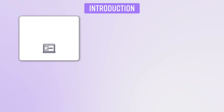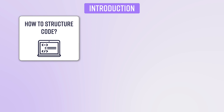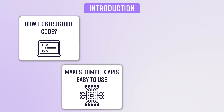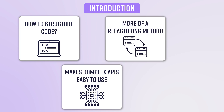Facade design pattern is a structural pattern, which means this pattern is used to structure your code in a neat and clean manner. It makes complex APIs easy to use. This pattern is more of a refactoring pattern — meaning you end up writing complex code or code that bloats over time, and then you utilize this pattern to refactor it and make it easy to use.